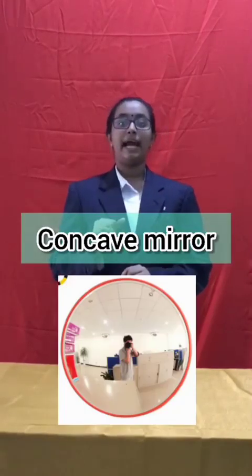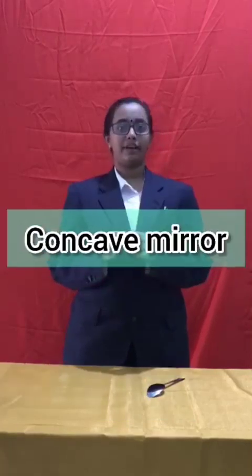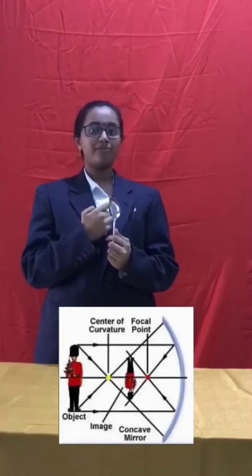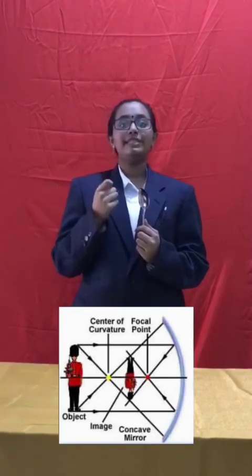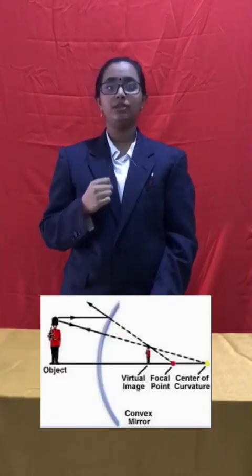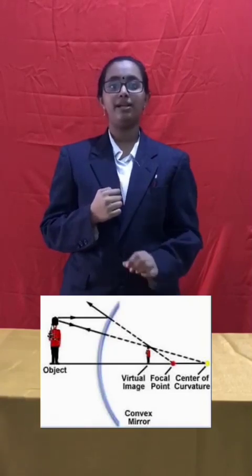There are two other types of mirrors: concave mirror and convex mirror. The concave mirror's surface curves inwards like the inner part of a spoon. When the light is reflected from a concave mirror, light rays converge at a focal point, and thus the image formed is magnified. The convex mirror's surface curves outwards like the outer part of the spoon, and the image formed is diminished.